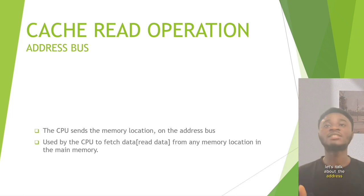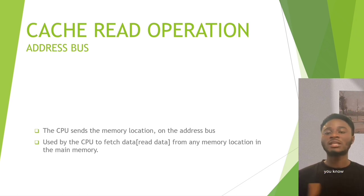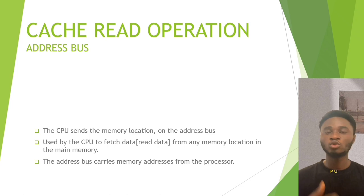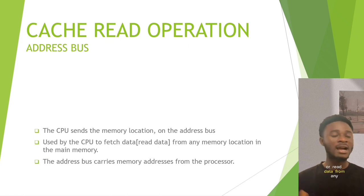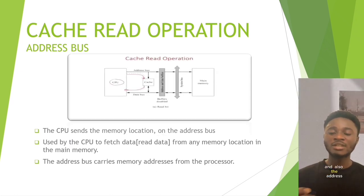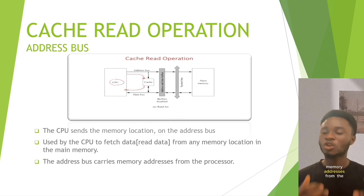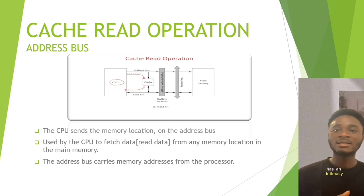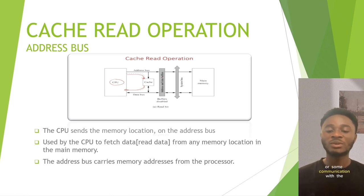Let's talk about the address bus. The CPU sends addresses of memory locations on the address bus, which is used by the CPU to fetch or read data from any memory location in main memory. The address bus carries memory addresses from the processor, and it also communicates with the cache — identifying the addresses of locations in the cache or memory that are to be read or written to.